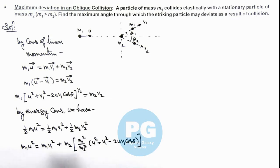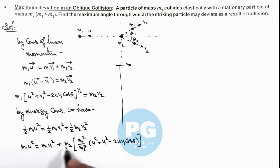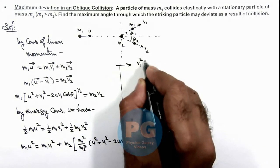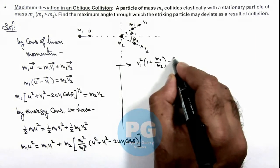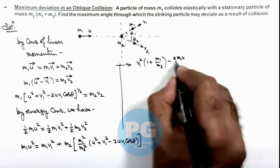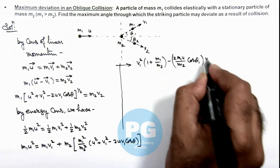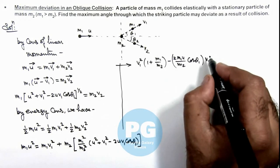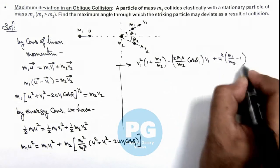This equation can be transformed into a quadratic equation in v₁. Rearranging, it can be written as: v₁²(1 + m₁/m₂) - 2(m₁u/m₂)cosθ₁ · v₁ + u²(m₁/m₂ - 1) = 0. Note that the angle being used here is θ₁ only.